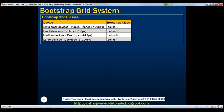Bootstrap includes several grid classes for creating layouts for different devices like mobile phones, tablets, laptops, and desktops. The available Bootstrap grid classes range from extra small devices like mobile phones to large devices like large desktop screens. We'll discuss these classes in detail in our next video. For now, let's use the class col-md-* to create the three-column layout.